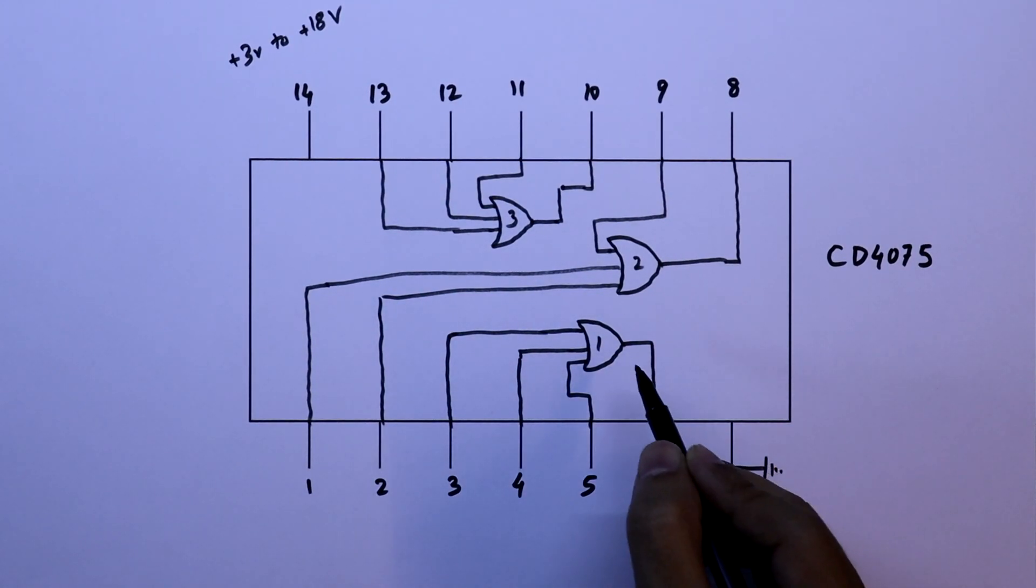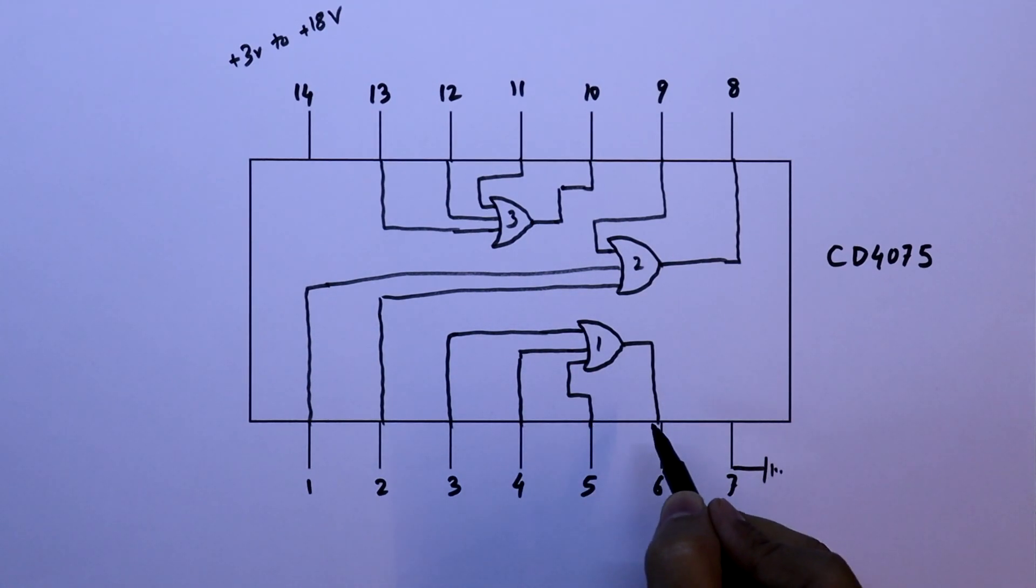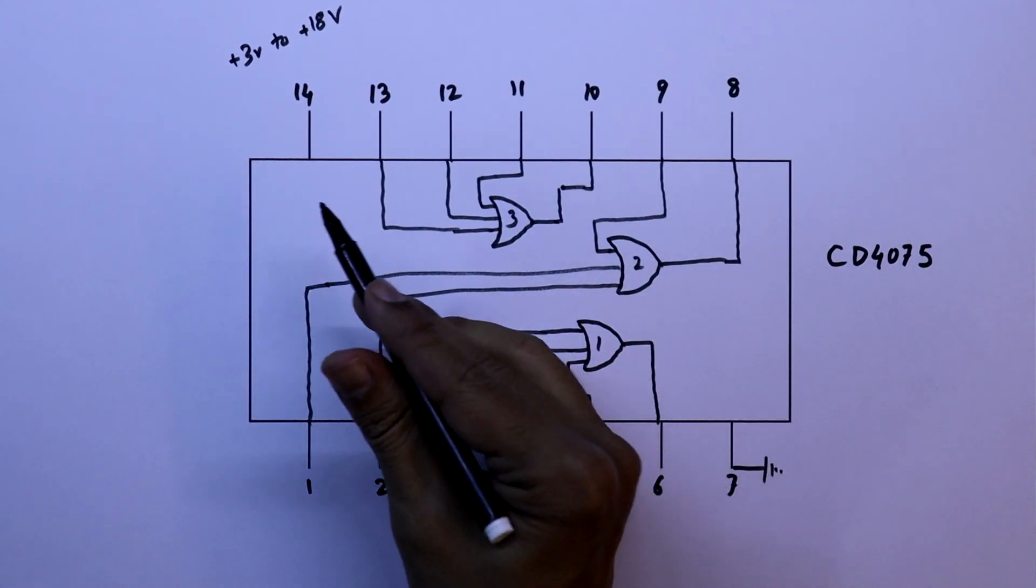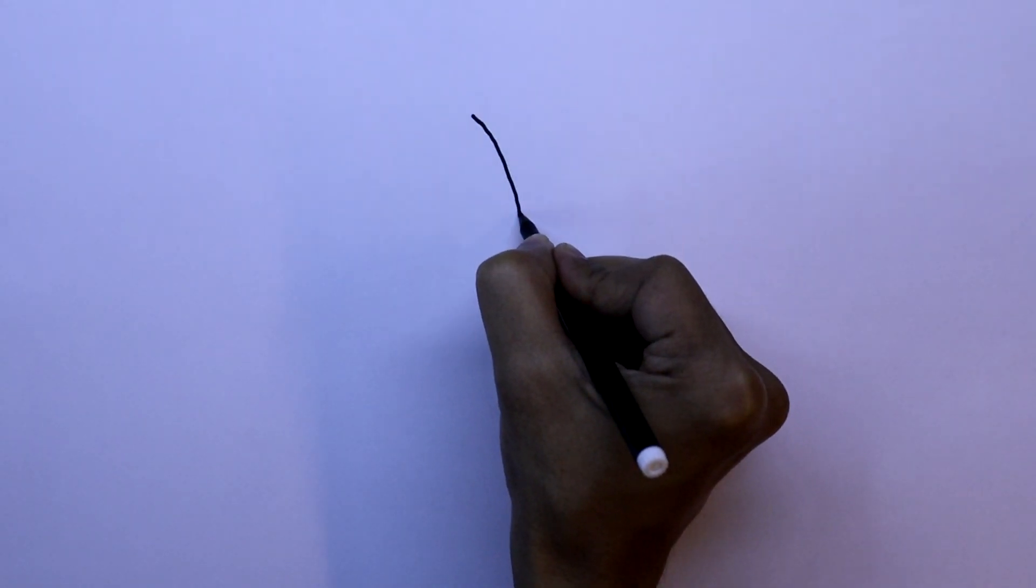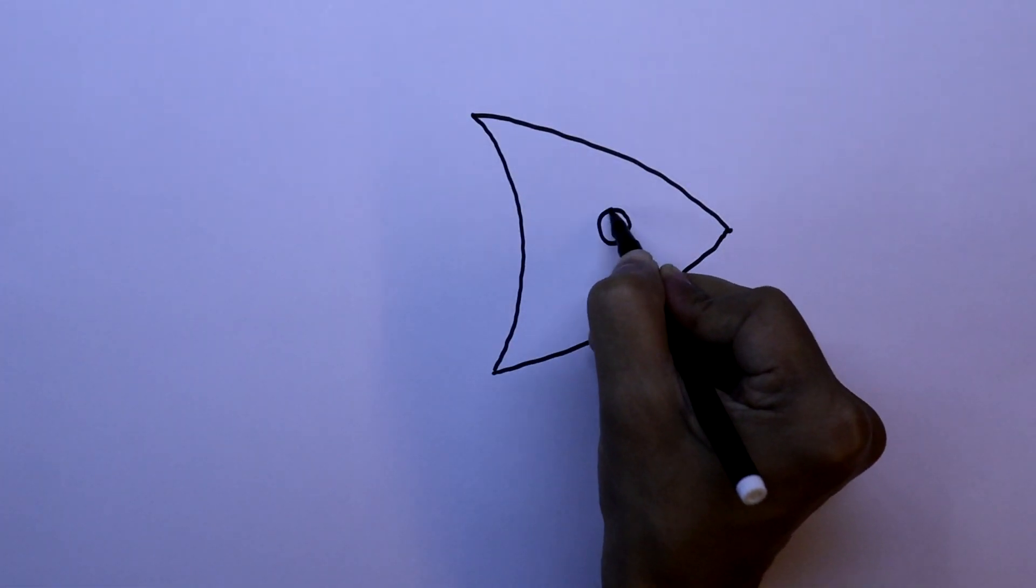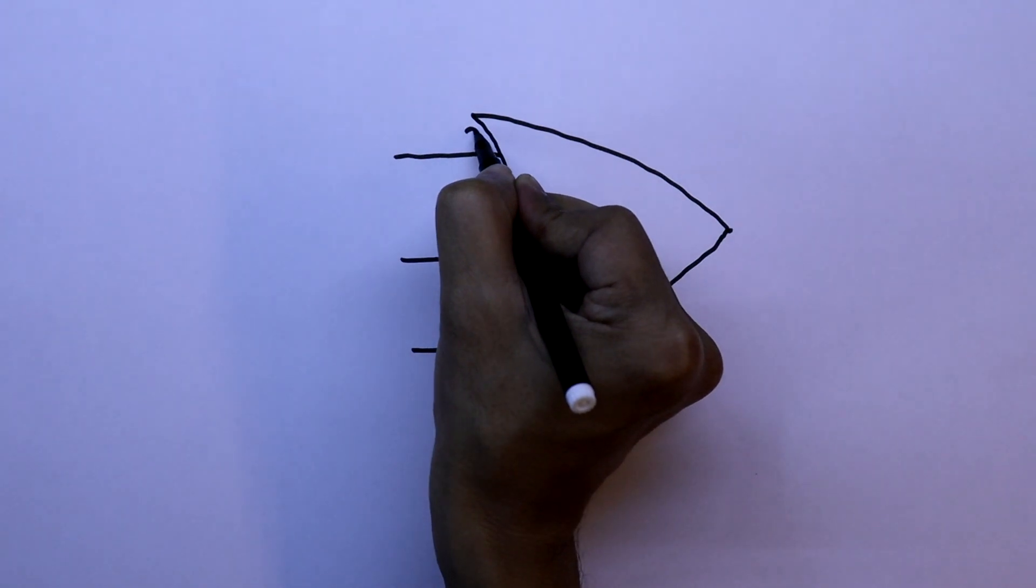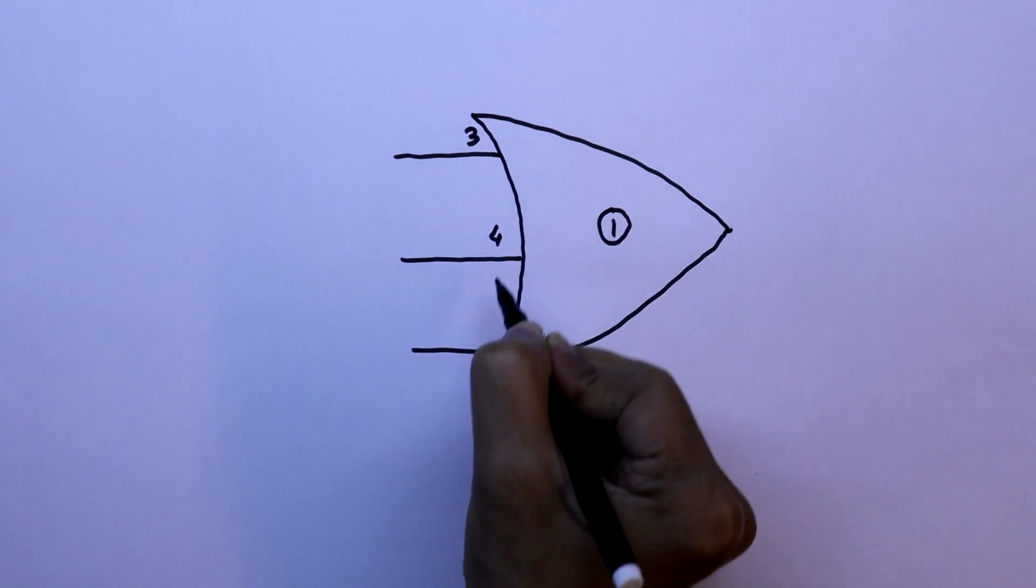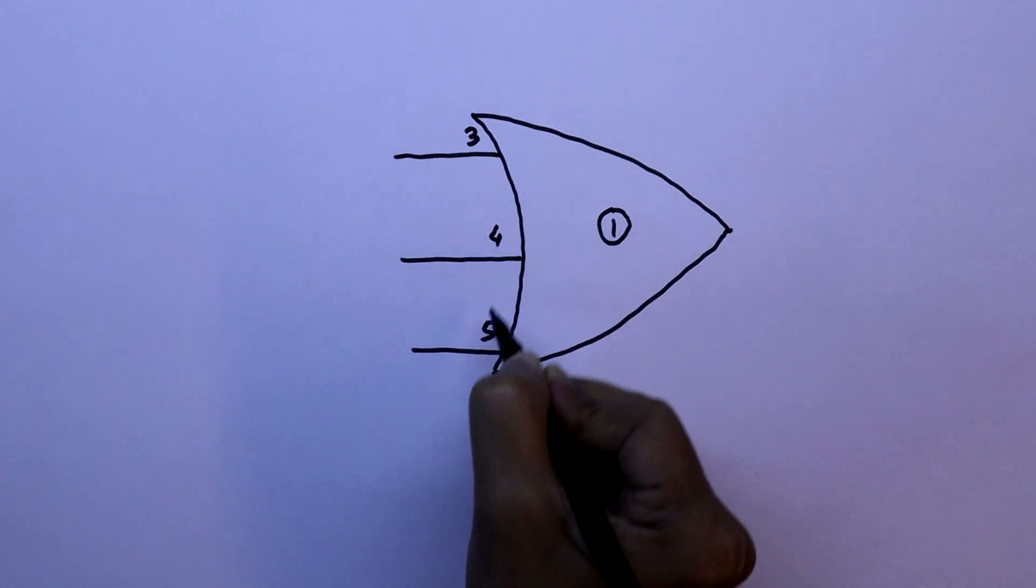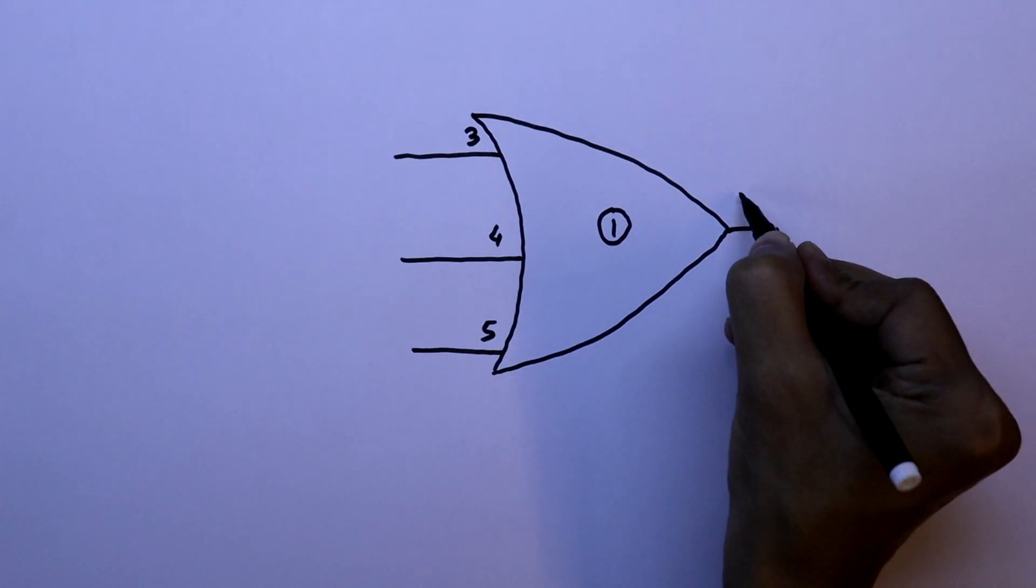To do the practical, we will use gate number 1, so we have to use pin number 3, 4, 5, and 6, and pin number 7 and 14 for the power supply. Here the inputs are pin 3, 4, and 5, and the output pin is pin number 6.